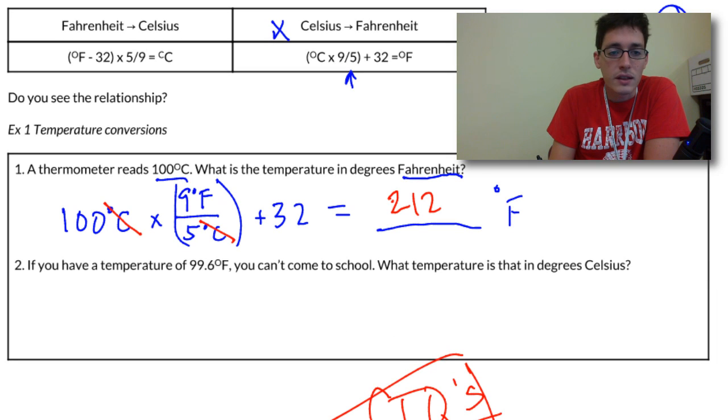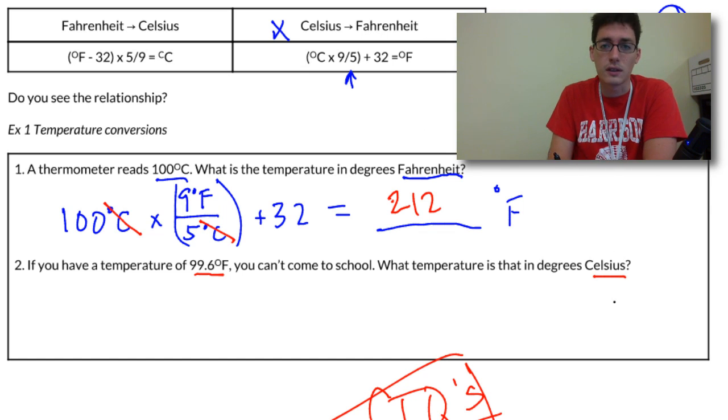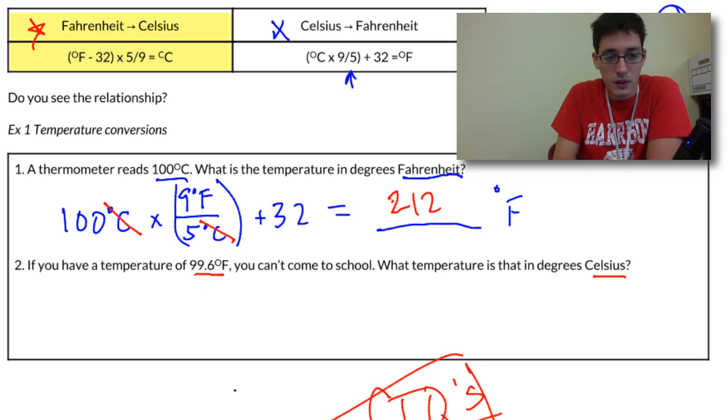Here's your second example problem. If we have a temperature of 99.6 degrees Fahrenheit, you can't come to school. That's a law in the school rules. If you have a fever, you can't come to school, but what is that temperature in degrees Celsius? Let's do a simple conversion. This time, we're starting with temperature in Fahrenheit, so we're going to be using this conversion factor.